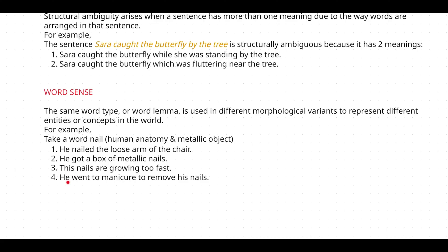The fourth sentence is 'He went to the manicure to remove his nails.' Metallic objects can't be removed during a manicure, so this refers to human anatomy again. Based on the sentence alone you can determine which sense the word belongs to — either the human anatomy sense or the metallic object sense. This is word sense disambiguation.